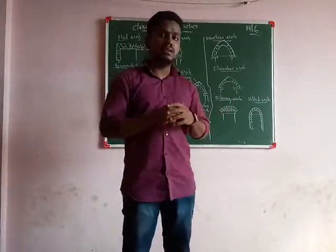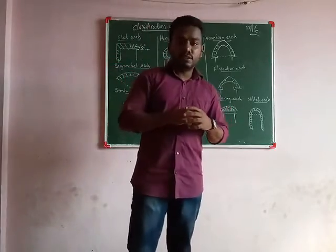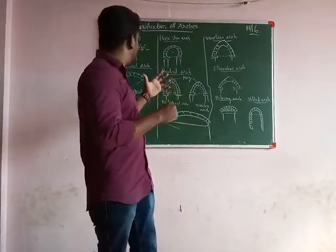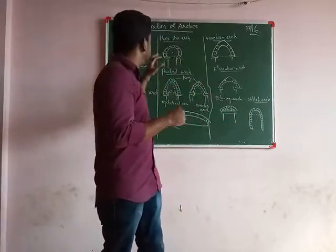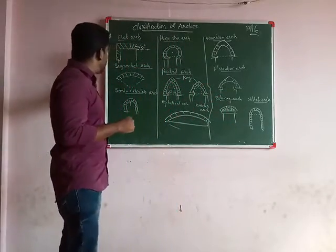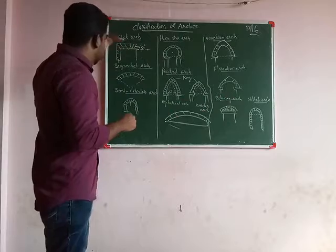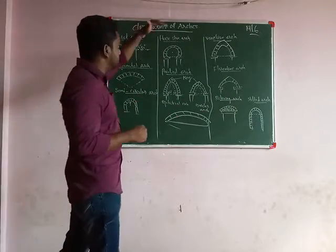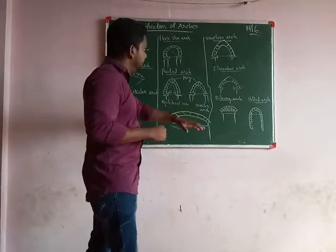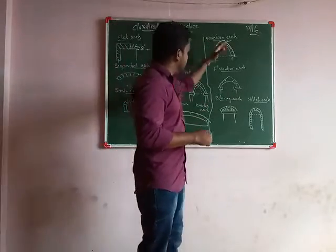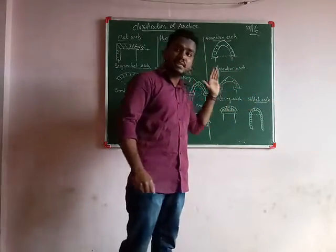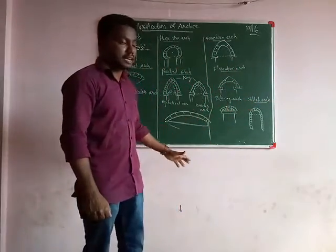If you look at the classification in the video, you can see it. The arch types shown are: segmental arch, semicircular arch, horseshoe arch, pointed arch, Venetian arch, flat arch, stilted arch, and semi-elliptical arch.